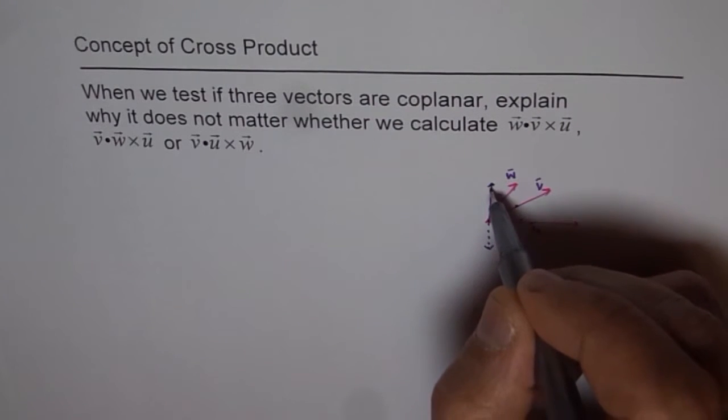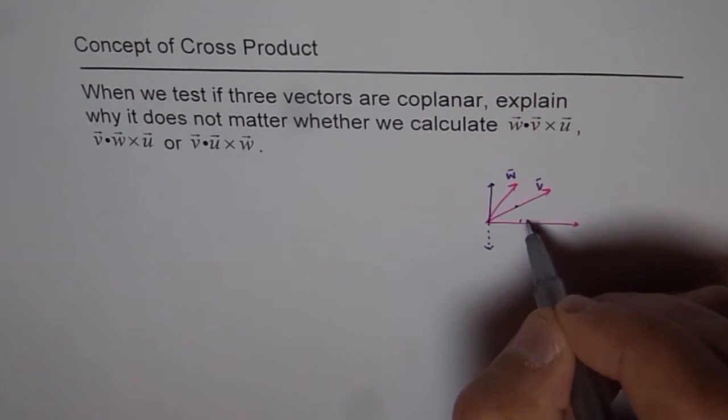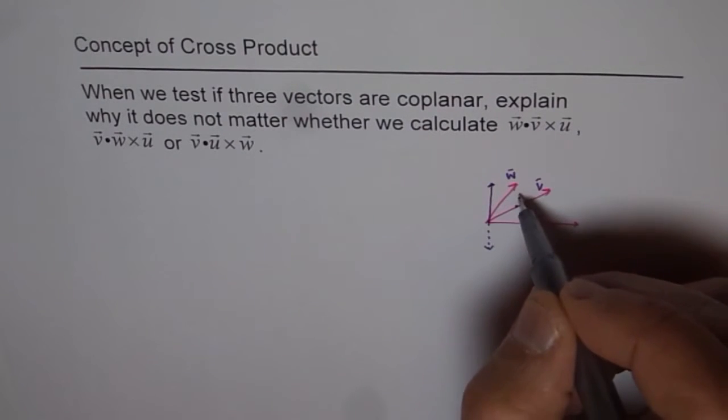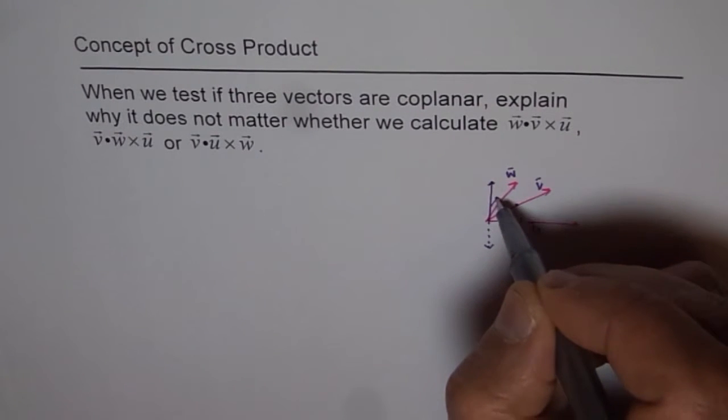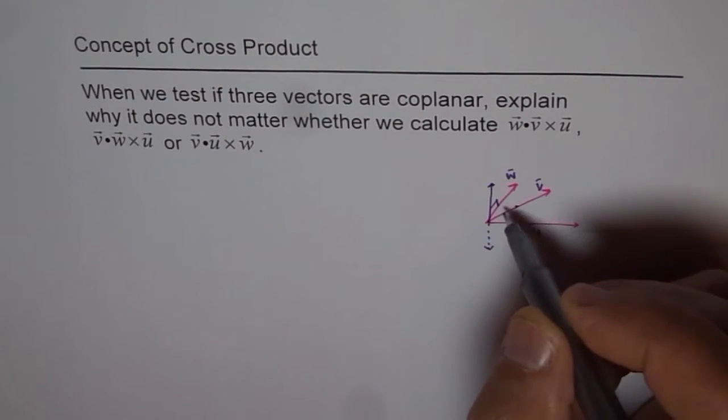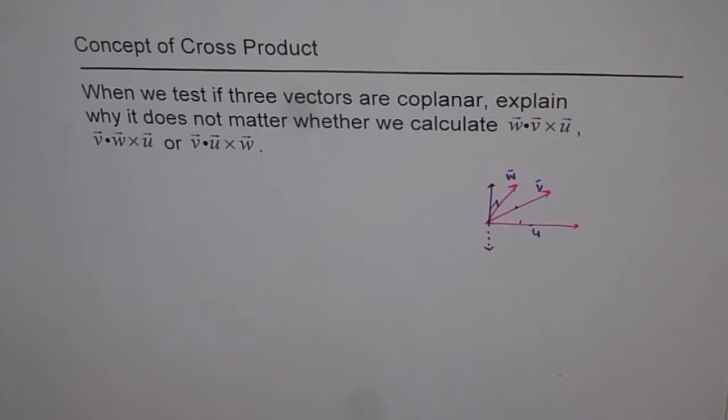Now, since this vector is perpendicular to both u and v, it has to be perpendicular to w also if w is in the same plane as u and v. So it will be perpendicular to w also, and therefore the dot product with the third vector will be 0.